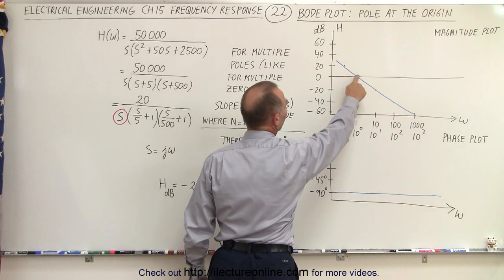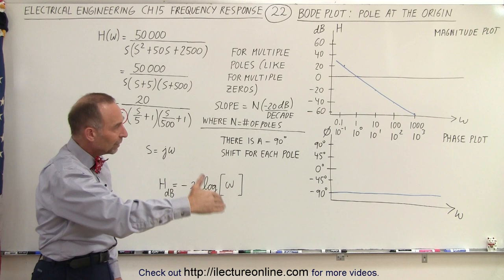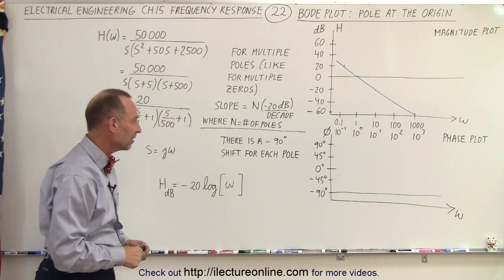Remember when omega equals 1, the log of 1 equals 0, and the magnitude at that point would be 0 dB. It would go negative past that and be positive in front of that.